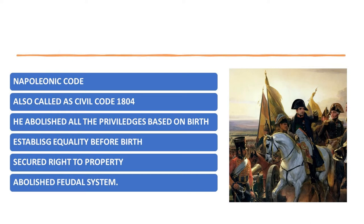Hello students, through this video I will explain about the Napoleonic Code. The Napoleonic Code is also called the Civil Code of 1804, which was written by Napoleon Bonaparte, the military leader who later became the Emperor of France.